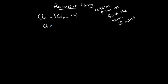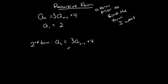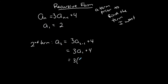Usually you're given the first term in a recursive form. Let's say the first term is two, and I want to find the second term. I replace n with two. Notice that n minus one is one, so I have three times a₁ plus four. This means that I need the first term to get to the second term — I need a previous term to get to the term that I want. I know a₁ is two, so I replace it: three times two plus four is six plus four, which is ten. So the second term is ten.